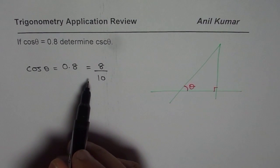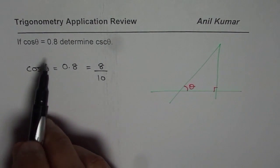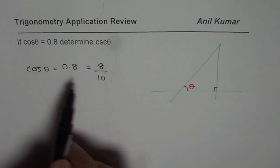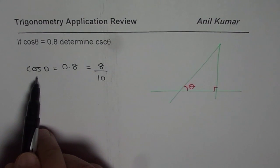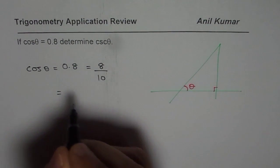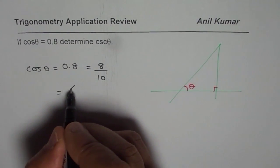At times calculator is not allowed in the test. So when we are given any decimal values, it is good to write it in fractions because trigonometric ratios are the ratios of side lengths. So 0.8 means 8 over 10, which you can simplify and write as 4 over 5.